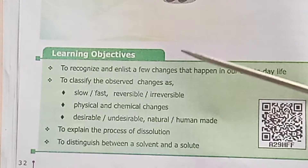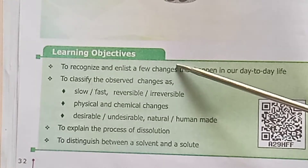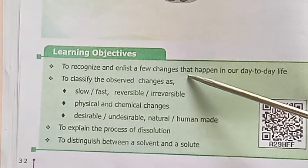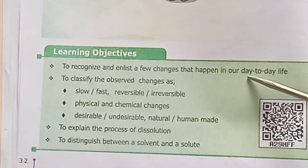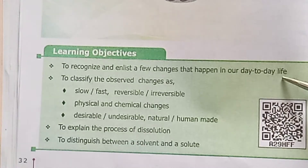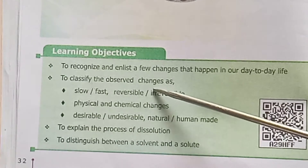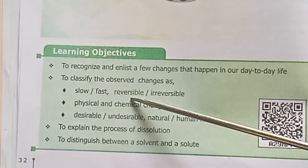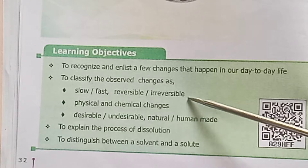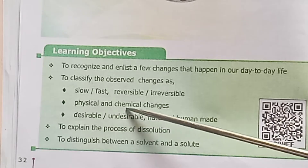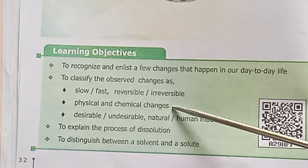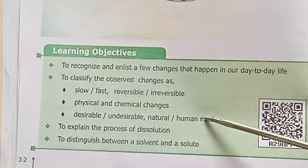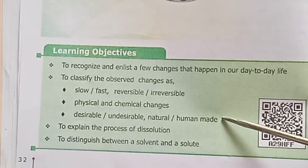Learning Objectives: To recognize and enlist a few changes that happen in our day-to-day life. To classify and observe changes — slow, fast, reversible, irreversible, physical and chemical changes, desirable, undesirable, natural, and human-made.